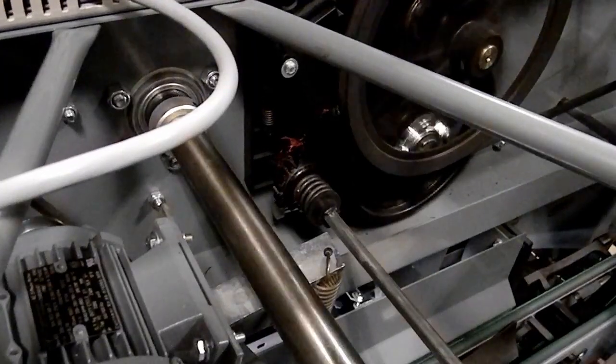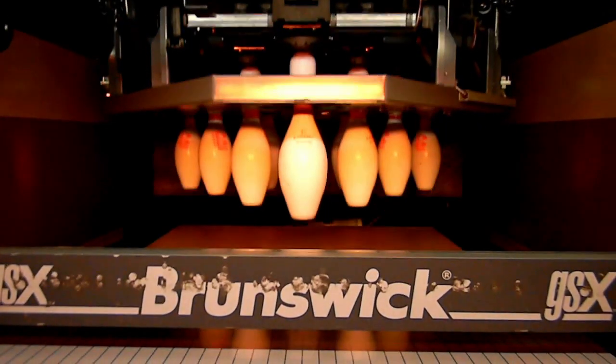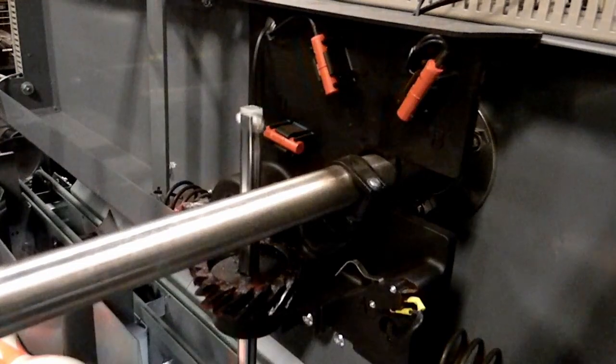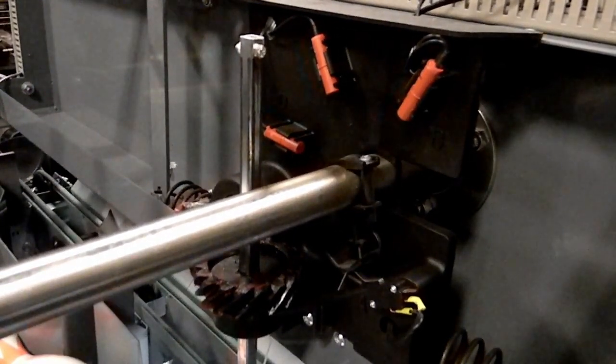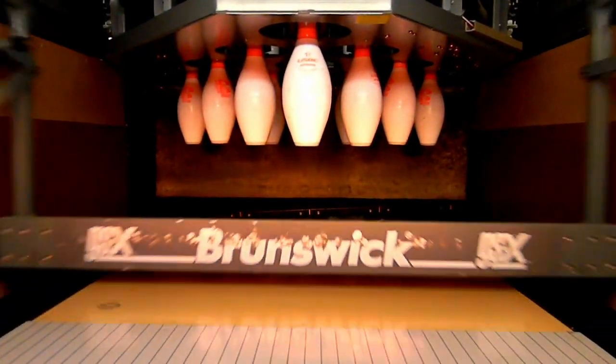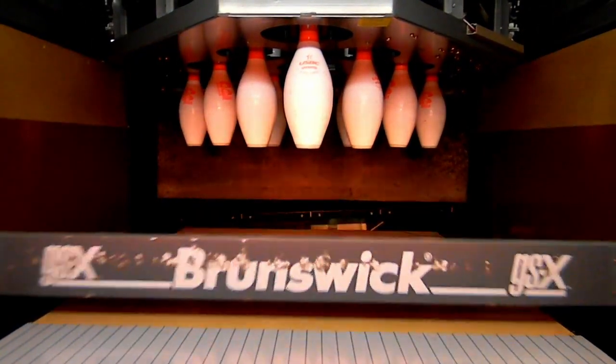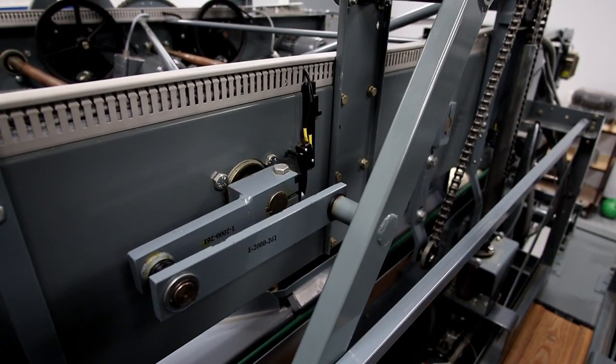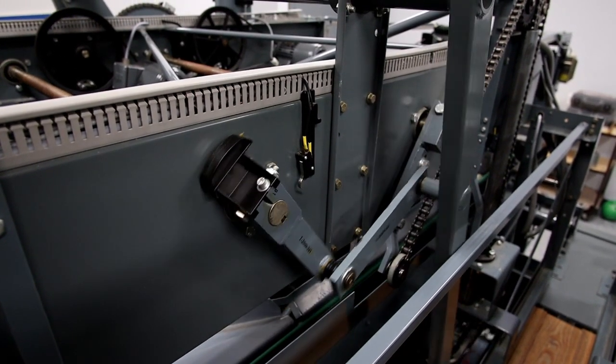The setting table with pins in the tongs raises and actuates switch A turning the table motor off. The sweep motor is energized. The sweep runs back and forward clearing the deadwood. When the sweep is fully forward the SM switch is actuated and the sweep motor is turned off.